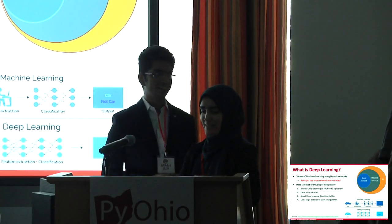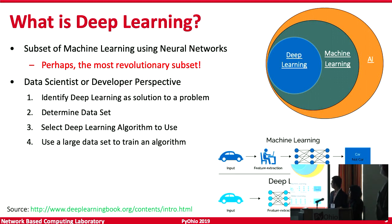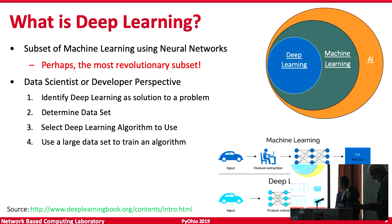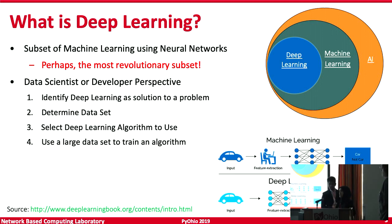What is deep learning? Deep learning is a subset of machine learning that's a subset of artificial intelligence, and it's possibly considered the most revolutionary subset. A big difference between machine learning and deep learning is the feature extraction phase. In machine learning, feature extraction is a tedious process done manually by an expert, whereas in deep learning, that can be covered by models. From a developer's perspective, you identify deep learning as a solution, determine a dataset, select the algorithm, and use that large dataset to train it.